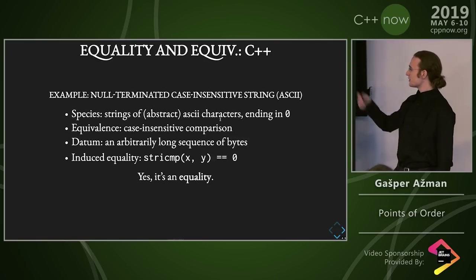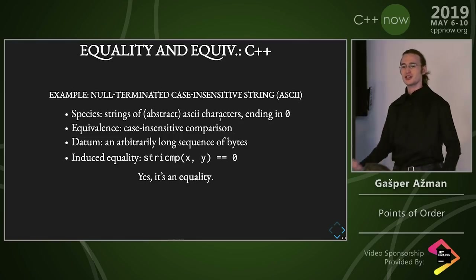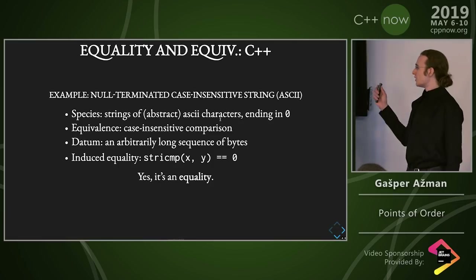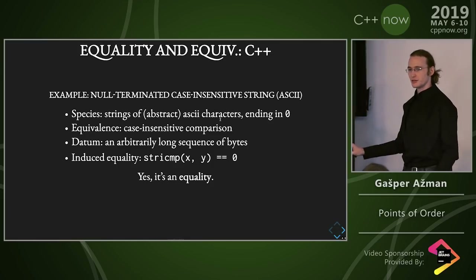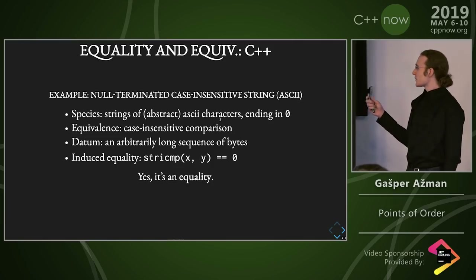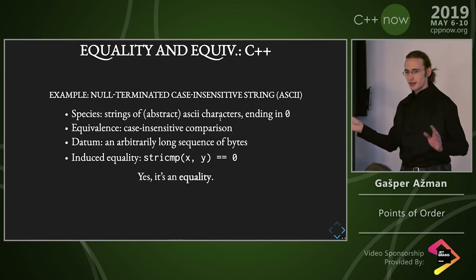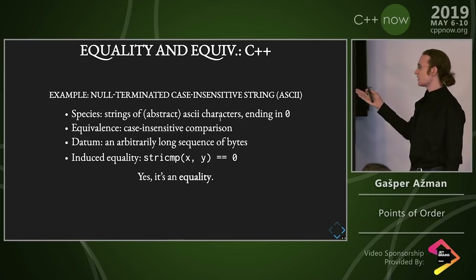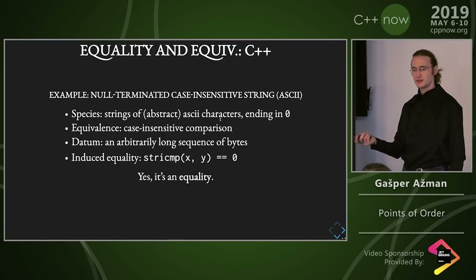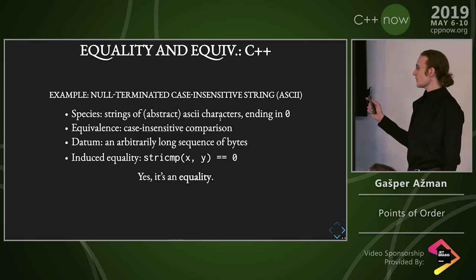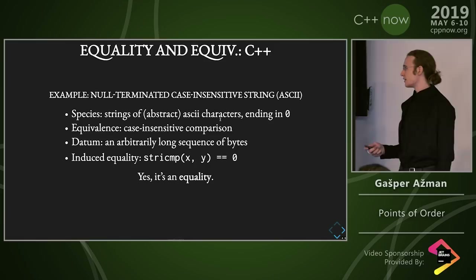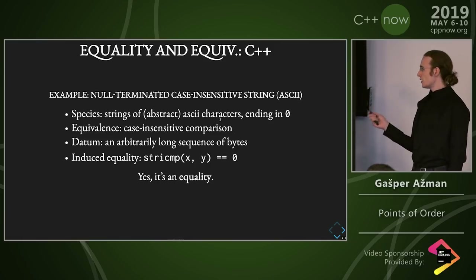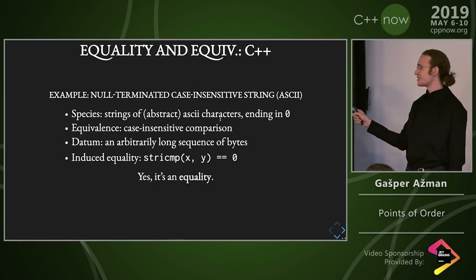This one's everybody's favorite bugbear, and we're going to see it several times because it's such a nice clear example. Let's take a null-terminated case-insensitive string encoded in ASCII — basically char star — because I don't want to deal with Unicode. The species is strings of abstract ASCII characters that always end in zero. Our equivalence is going to be case-insensitive comparison. And a datum is an arbitrary long sequence of bytes. The induced equality is strcasecmp equals zero. And this is an actual equality because we said we didn't care about case.